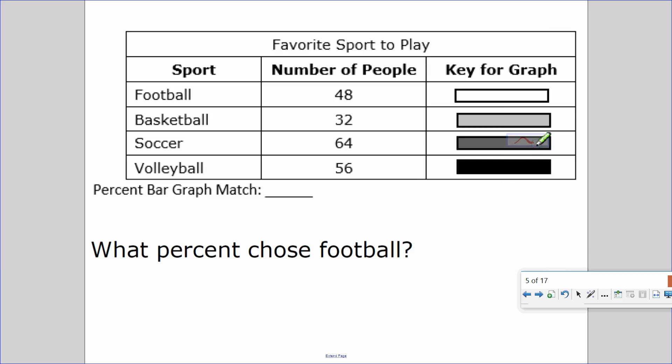So let's look at the first example. Favorite sport to play. 48 people chose football, 32 people chose basketball, 64 people chose soccer, and 56 people chose volleyball. So first of all, we need to figure out how many people they asked in the survey. If you add this up, that's 200 people in the survey.